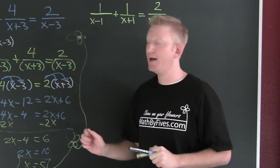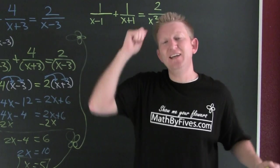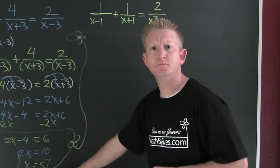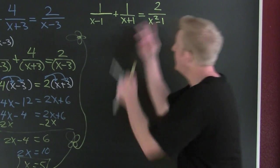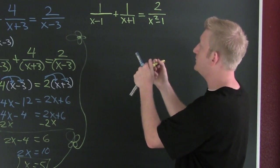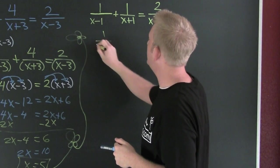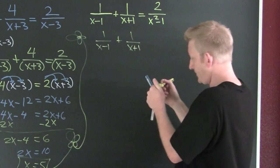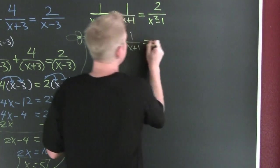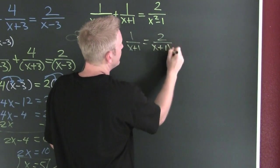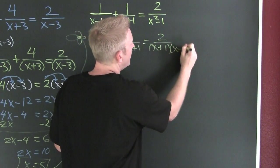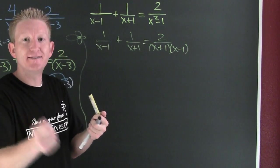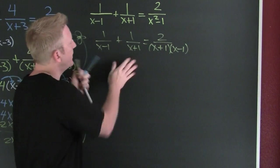This next one we're going to do just like that last one. But here we need to make sure that we check it. Factor first. I'm going to have one over X minus one, plus one over X plus one, and that's going to equal two over (X plus one)(X minus one).